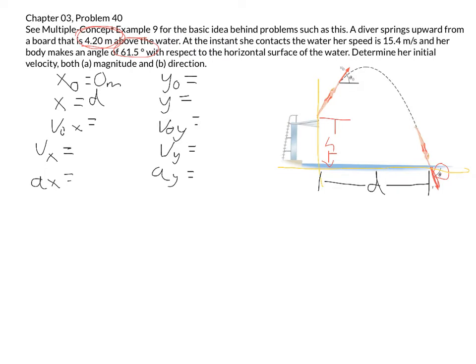Our initial x velocity, we don't know. And our final x velocity, we can figure out. Based on what we're given, we can determine that it's going to be the final velocity v that we're given, multiplied by the cosine of the angle theta.